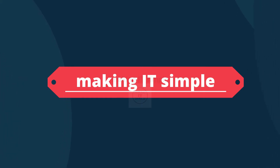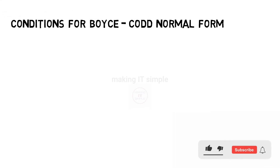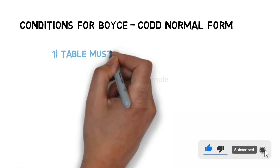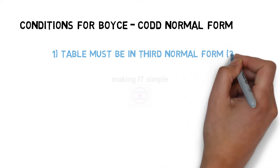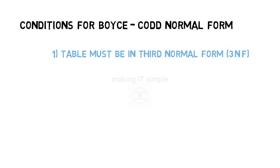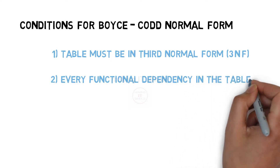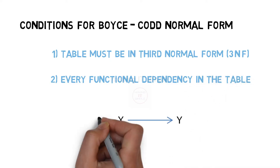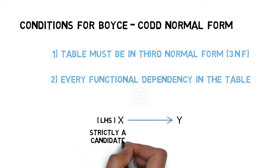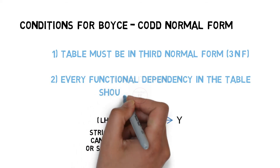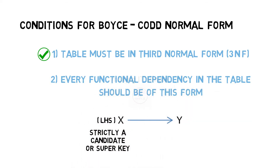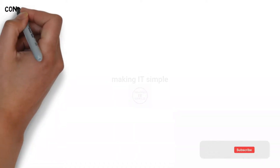Hello and welcome to Making IT Simple. The two conditions for Boyce-Codd normal form are as follows: first, the table must be in third normal form — BCNF is sometimes referred to as an extension of third normal form. The second condition is that every functional dependency in the table, say X determines Y, the left-hand side or X should always be a candidate key or a super key. If any table satisfies these two conditions, we can conclude that the table is in BCNF.